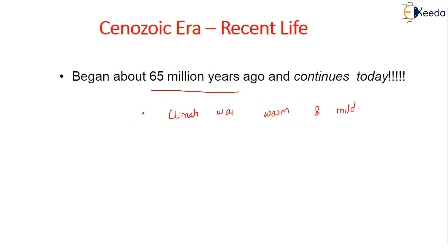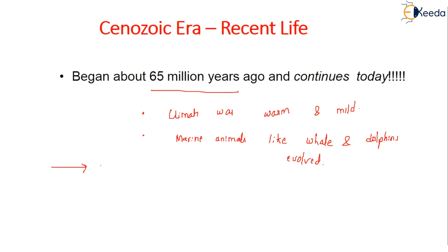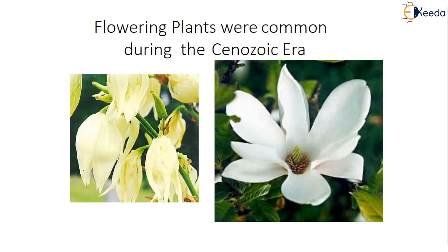During the Cenozoic era, the climate was warm and mild. Marine animals such as whales and dolphins evolved, and mammals began to increase rapidly. Many mountain ranges formed during this era, and flowering plants became very common.